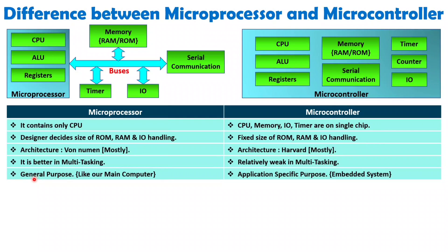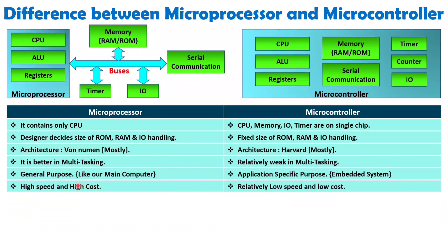The usage of microprocessor is for general purpose, like our main computer, while microcontroller is used for application-specific purposes like embedded systems. Examples of embedded systems include remote controls, microwave ovens, refrigeration, cooling conditions, washing machines — for timer, counter, temperature measurement, and temperature observation. Microprocessors are designed for high speed operation and high cost, while microcontrollers are designed for low cost and low speed applications.